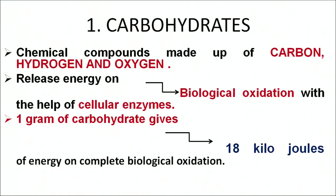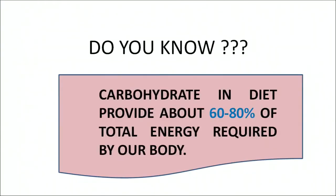For nutrition, we depend on the nutrients present in food. The number one nutrient is carbohydrates. These are compounds made up of carbon, hydrogen and oxygen. They release energy on biological oxidation with the help of cellular enzymes. One gram of carbohydrate gives 4 kilocalories of energy on complete biological oxidation.